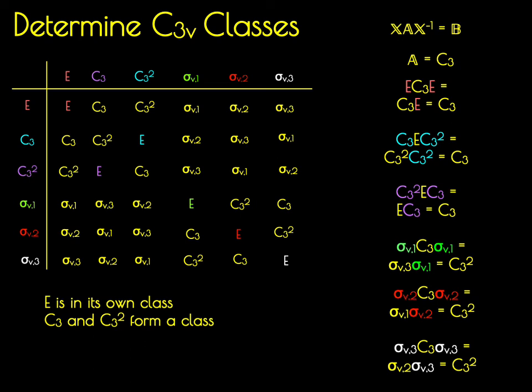So what we've just shown is that C3 and C3 squared are conjugate elements and they form a class. For completeness, you would go through and determine the similarity transform of C3 squared by all elements X, but that in practice is a little bit redundant because we would find a similar relationship that C3 and C3 squared are conjugate elements.